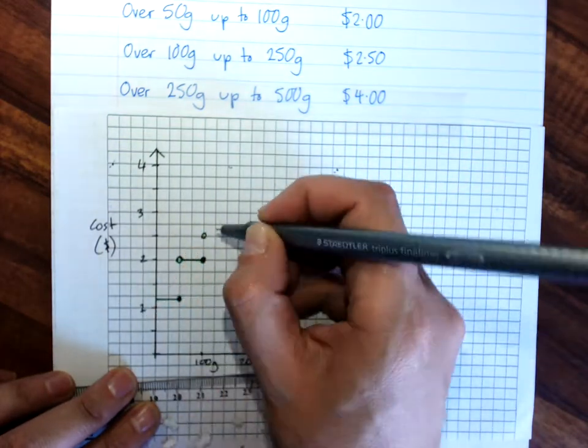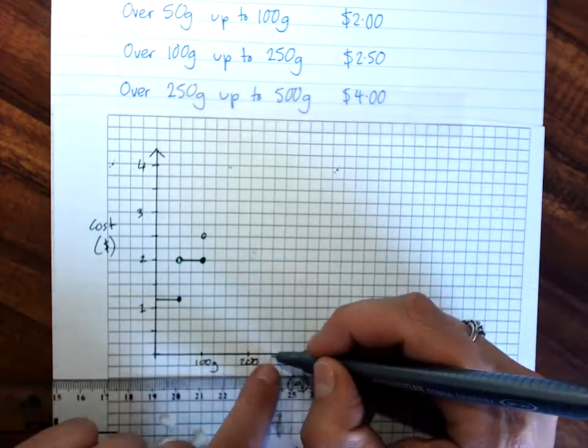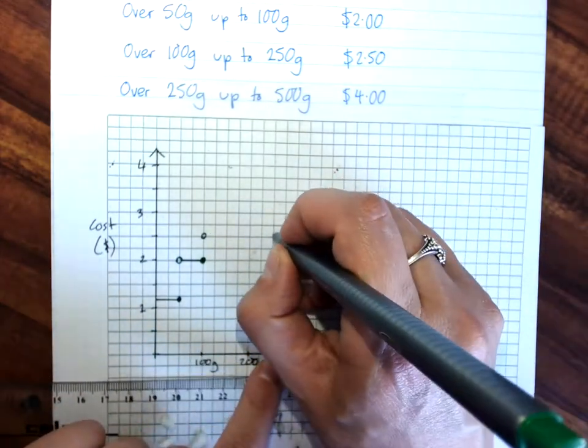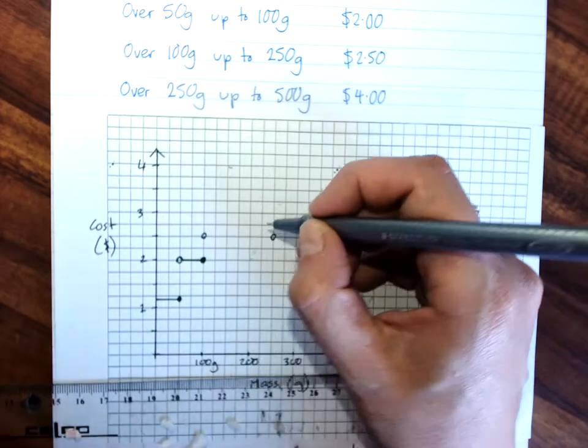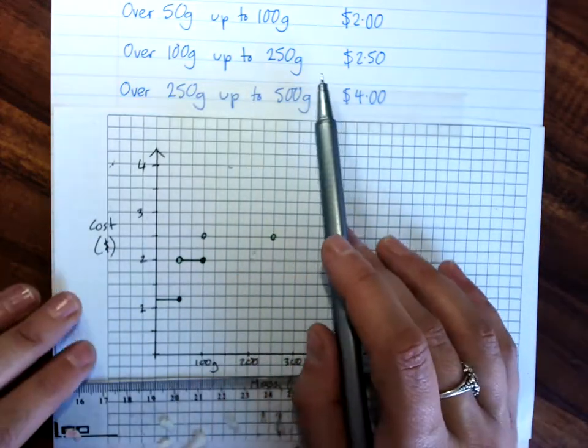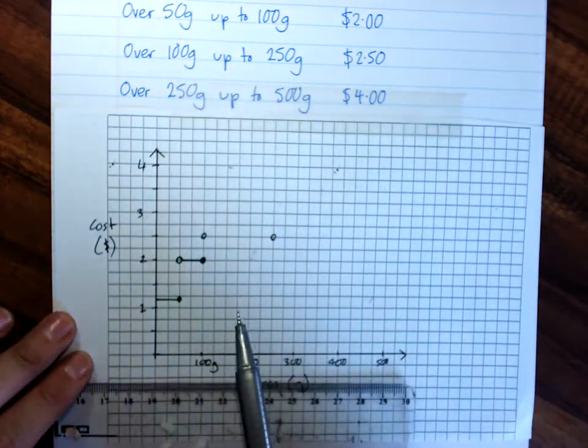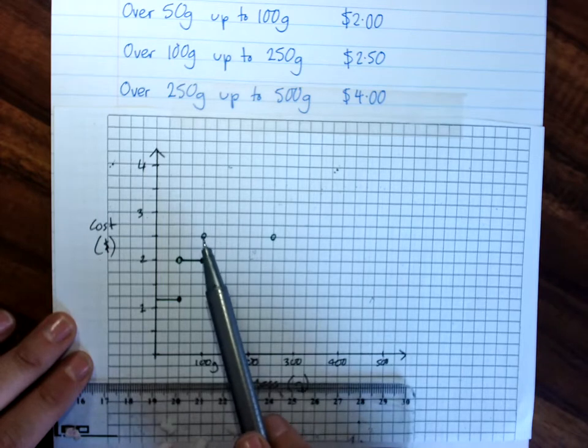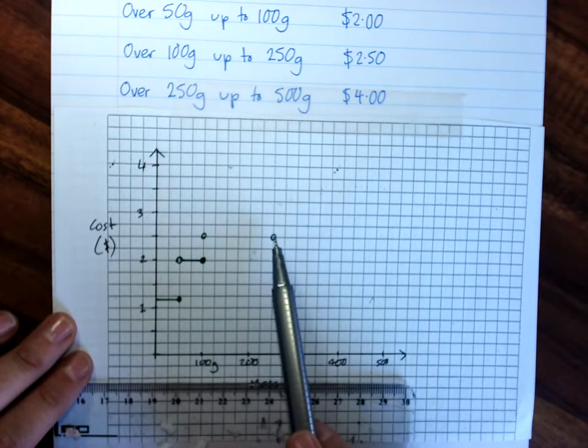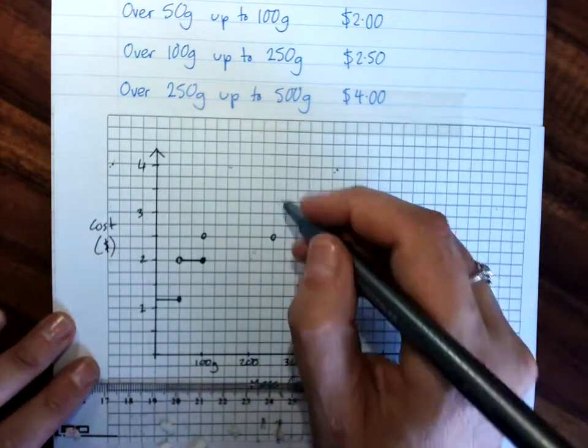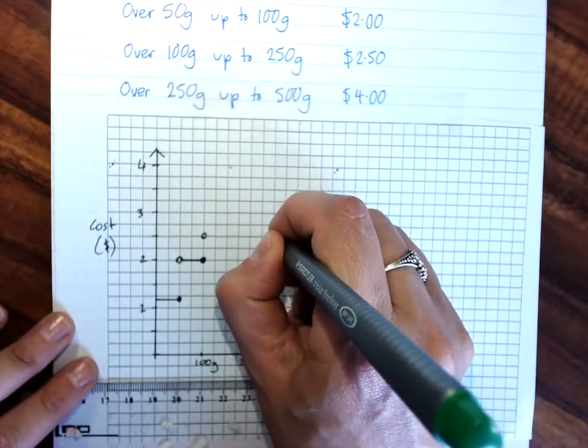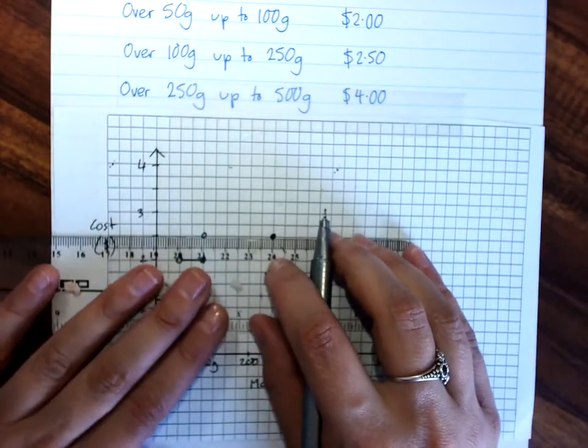Remember, you can always put your circles in the correct spot, 100 grams, 250 grams, and then work out what will be colored. So, 100 grams is not included here, because that's included there, up to 250, so my 250 would be included here. And draw your line.